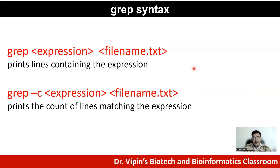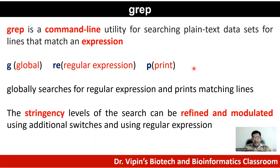The basic syntax is simple: you say grep, then give the expression you want to search for, followed by the file name with its full extension. This prints all lines containing the expression of interest. If you want to know the number of times your expression appears in the file, you use grep with the -c switch, followed by the expression and file name. This prints the count of matching lines.